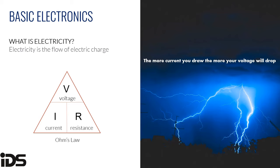Ohm's law defines the relationship between power, voltage, current, and resistance. For example, one ohm is the resistance value through which one volt will maintain a current of one amp. A whole bunch of formulas can be derived from this relationship: voltage equals current times resistance; current equals voltage divided by resistance; resistance equals voltage divided by current. The triangle diagram is a helpful representation — if you remember where the symbols belong, you can easily work out the formulas.